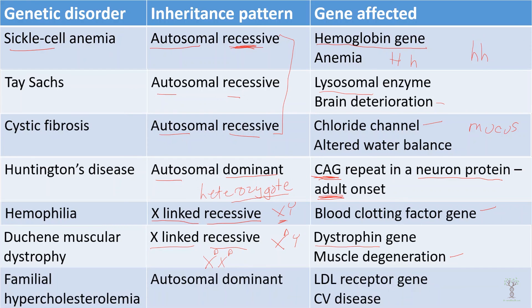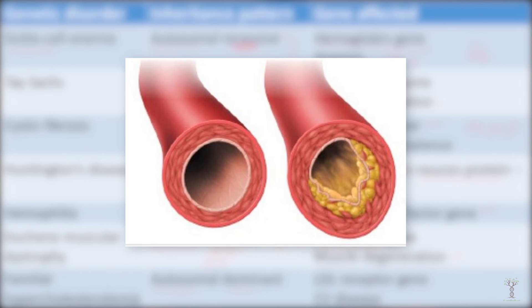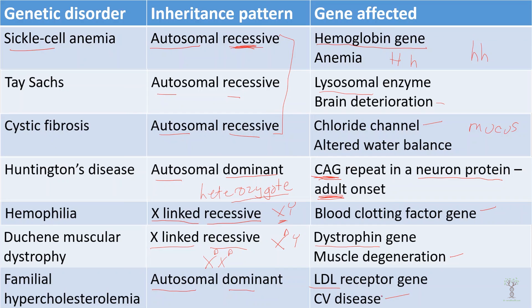Lastly, familial hypercholesterolemia. This is an autosomal dominant disease as well, and it affects the LDL receptors that carry fats through the bloodstream. This causes an increase in cardiovascular disease somewhere around the age of 30.